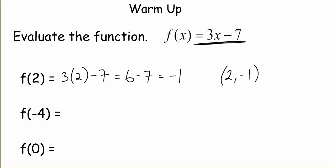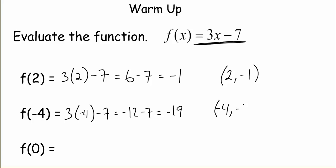That's also an x-y value. When we input a negative 4, 3 times negative 4 is negative 12, and negative 12 minus 7 is negative 19. So we input a negative 4, we get out a negative 19. When we input a 0, 3 times 0 is 0, and 0 minus 7 is negative 7. When we input a 0, we get out a negative 7.